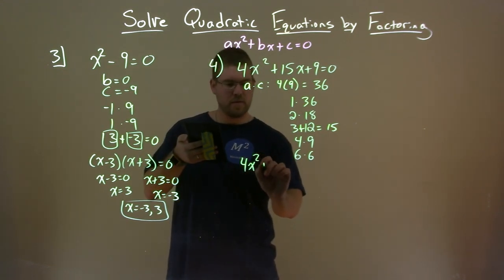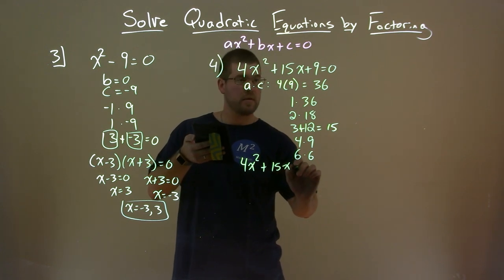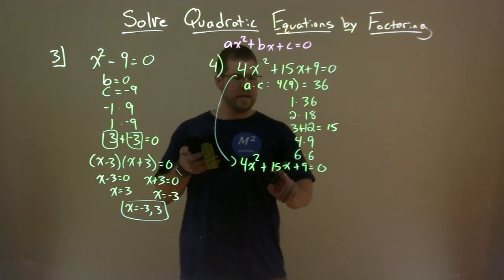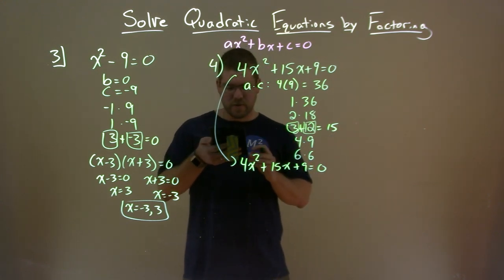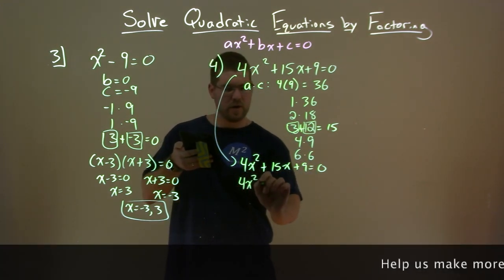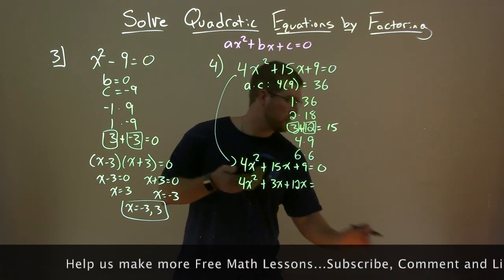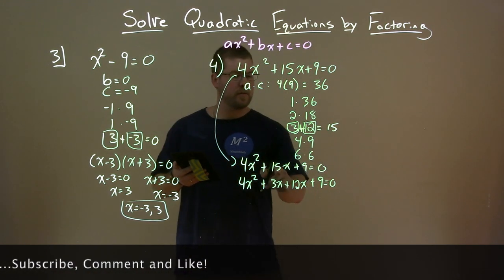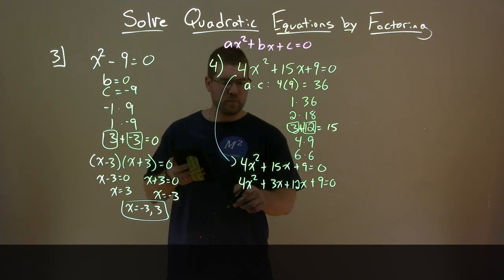Let me rewrite 4x squared plus 15x plus 9 equals zero down here. What we're going to do now is replace the 15x term — the bx term — with these two numbers. So we have 4x squared plus 3x plus 12x plus 9 equals zero. Notice that 3x plus 12x is the same as 15x, so we haven't changed anything.